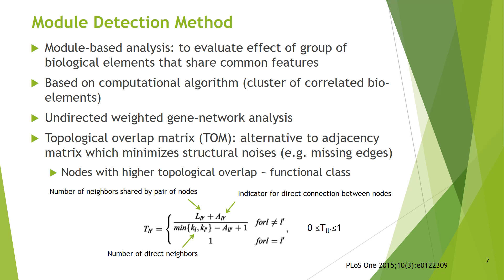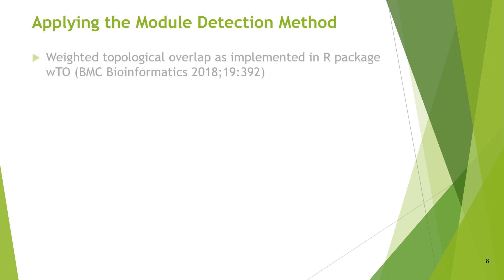The method is based on a computational algorithm which clusters correlated bioelements. More specifically, the method is a topological overlap matrix, TONE. This corresponds to an undirected weighted gene network analysis approach. The method presents an alternative to traditional adjacency matrices, which is capable of minimizing structural noise such as missing edges. The method groups nodes that present the higher topological overlap. By including topological information, it not only uses the direct connection between two nodes, but also the similarity between their neighborhoods. Weighted topological overlap was applied here as implemented in the R-package WTO.